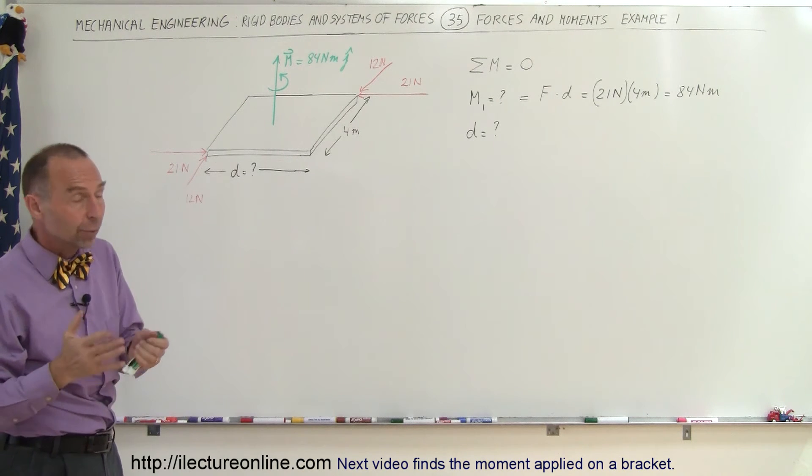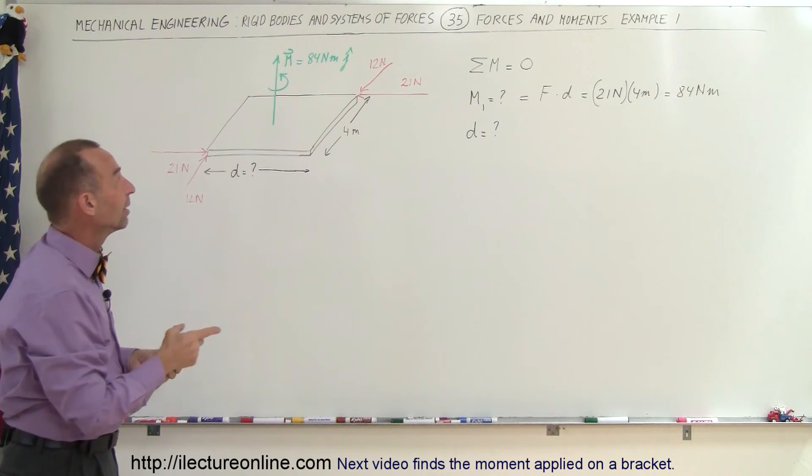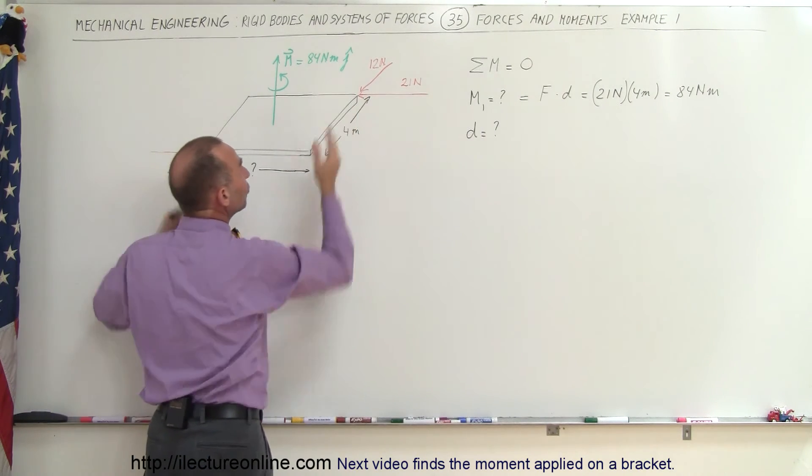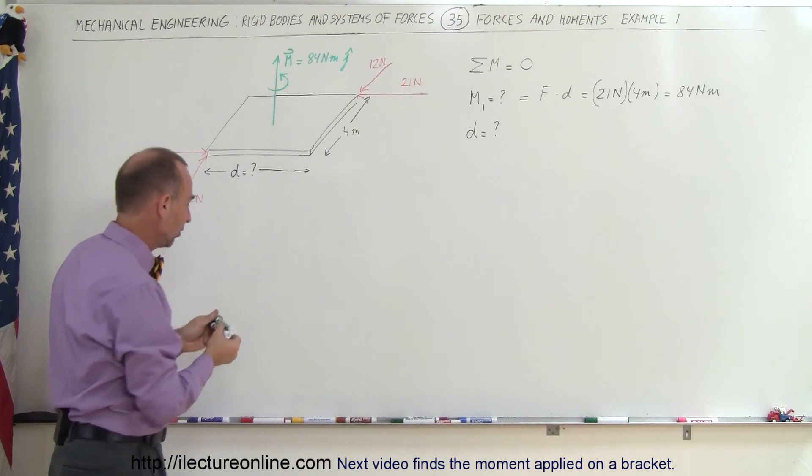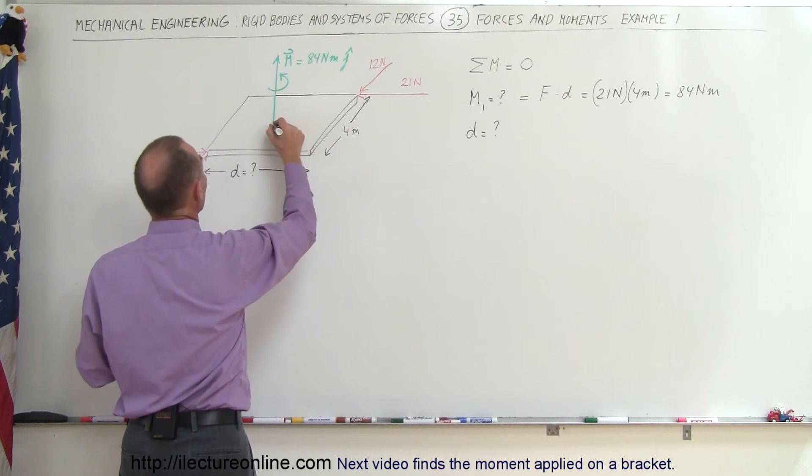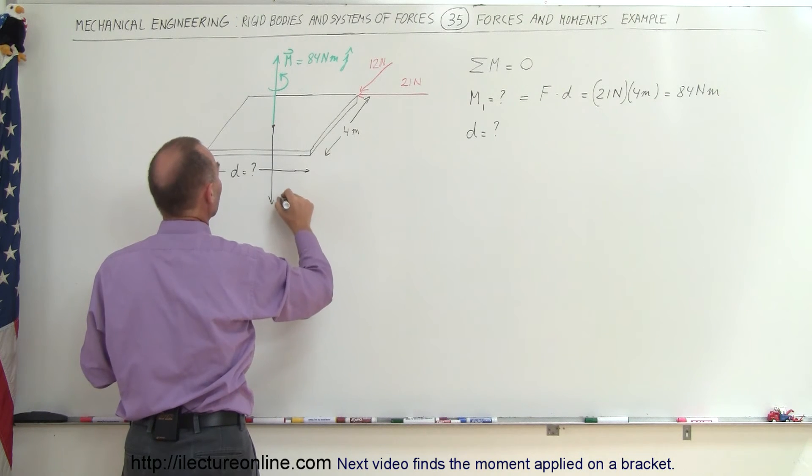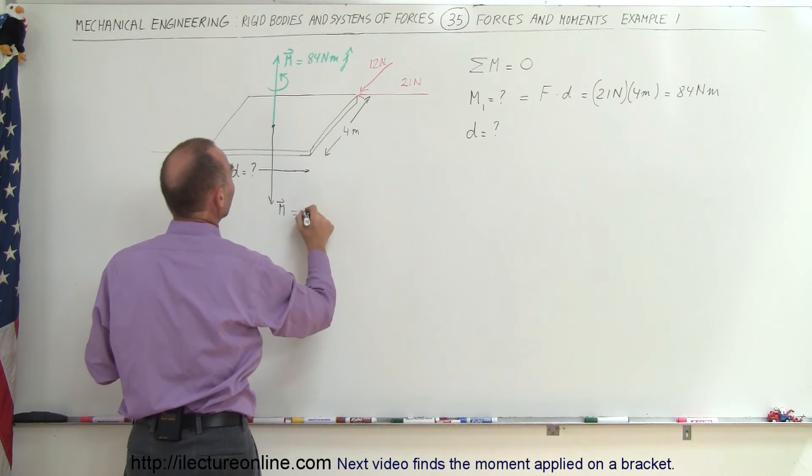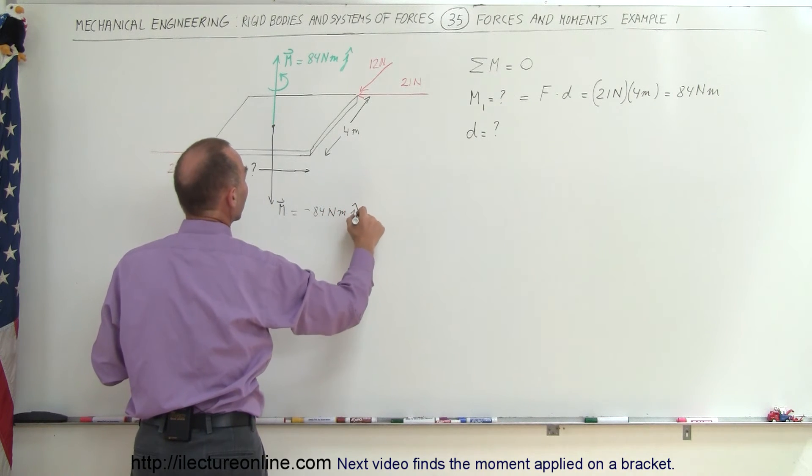Okay, from that we know that since the sum of the moments add up to zero, that means the moment caused by the 12 Newton forces must be minus 84 Newtons. So let's draw that here. From this point here we have a negative moment. So the moment caused by the 12 Newton forces would be equal to minus 84 Newton meters in the y direction.